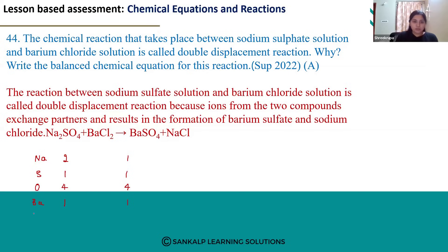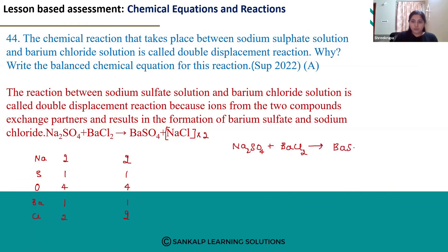Then chlorine — on the reactant side it's two, and on the product side the count is one. So if we multiply this compound by two, then sodium will become two and chloride will become two. Now the reaction is balanced. The balanced chemical equation is: Na₂SO₄ + BaCl₂ → BaSO₄ + 2NaCl.